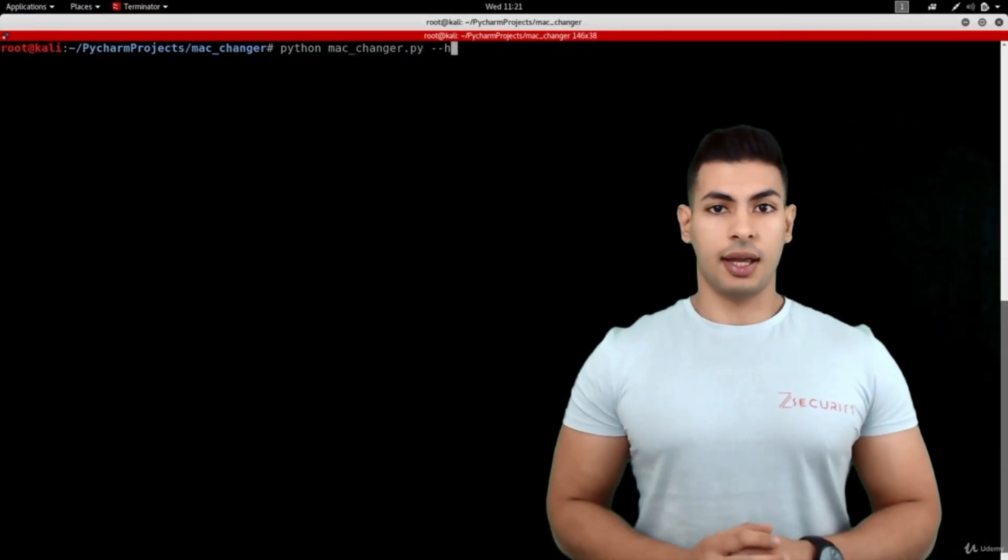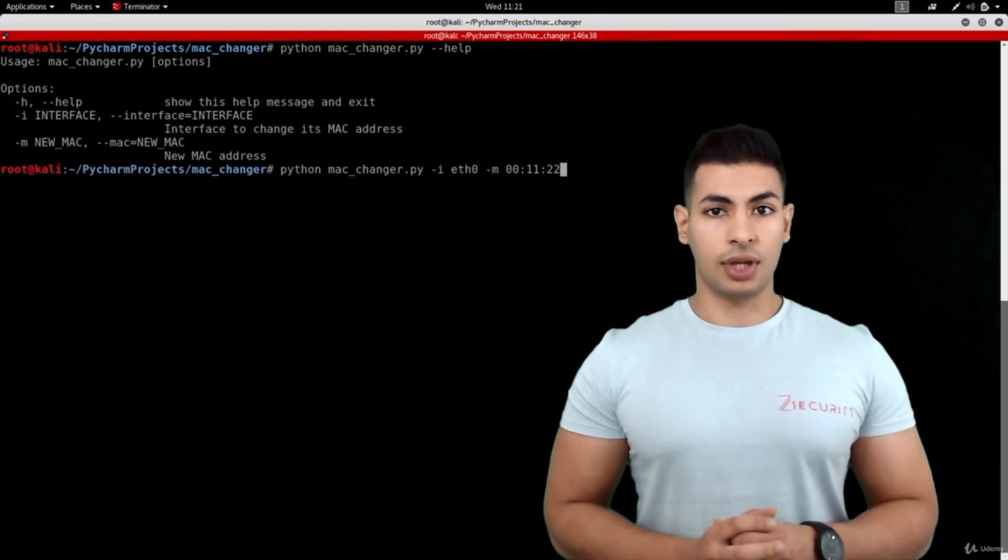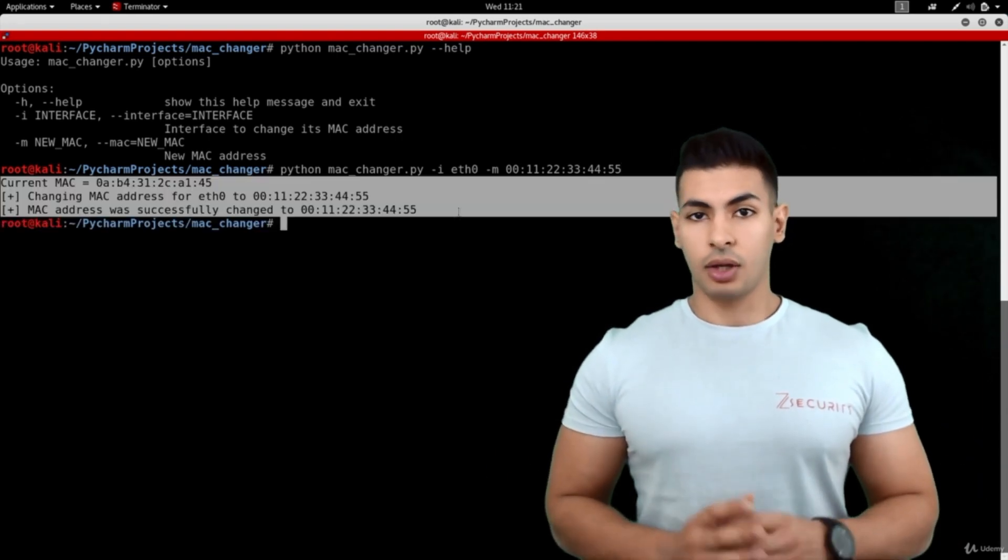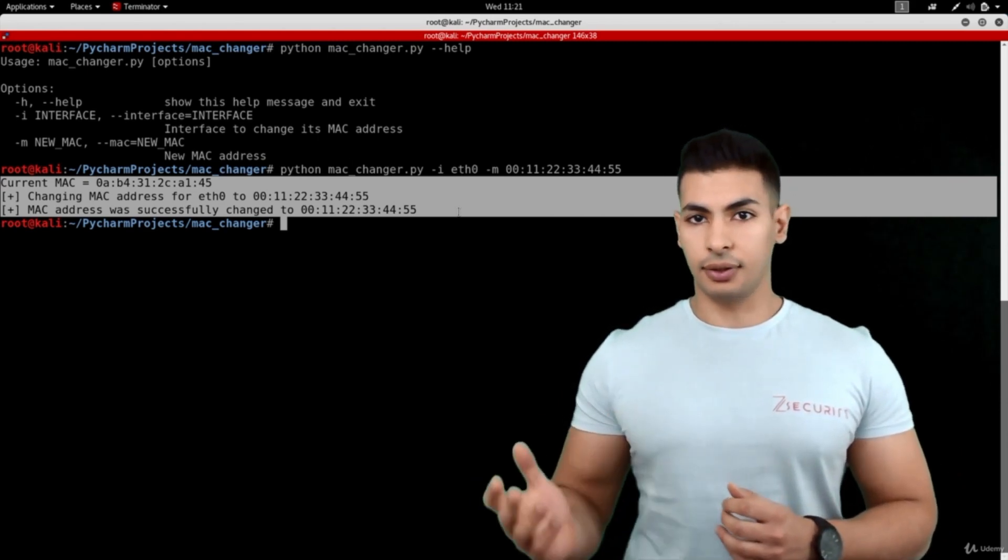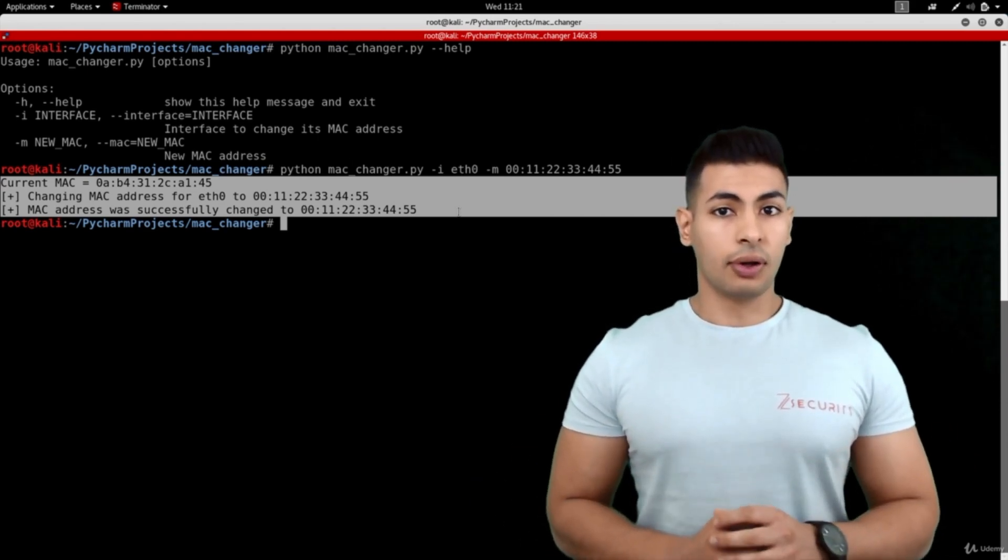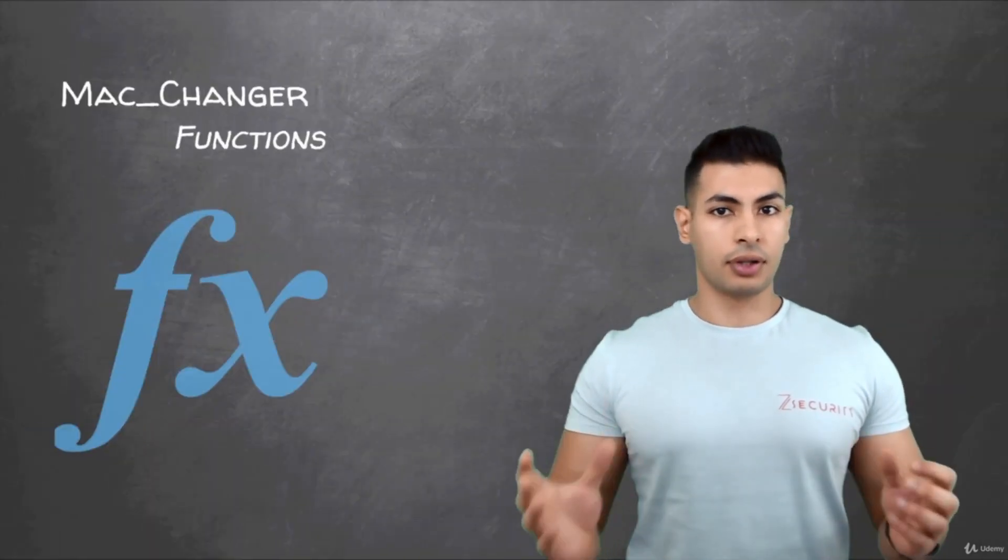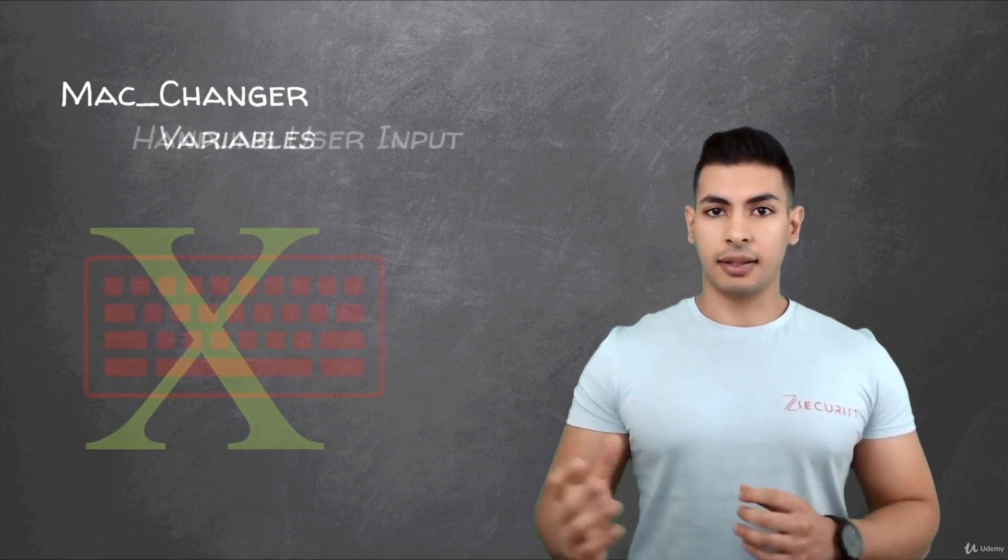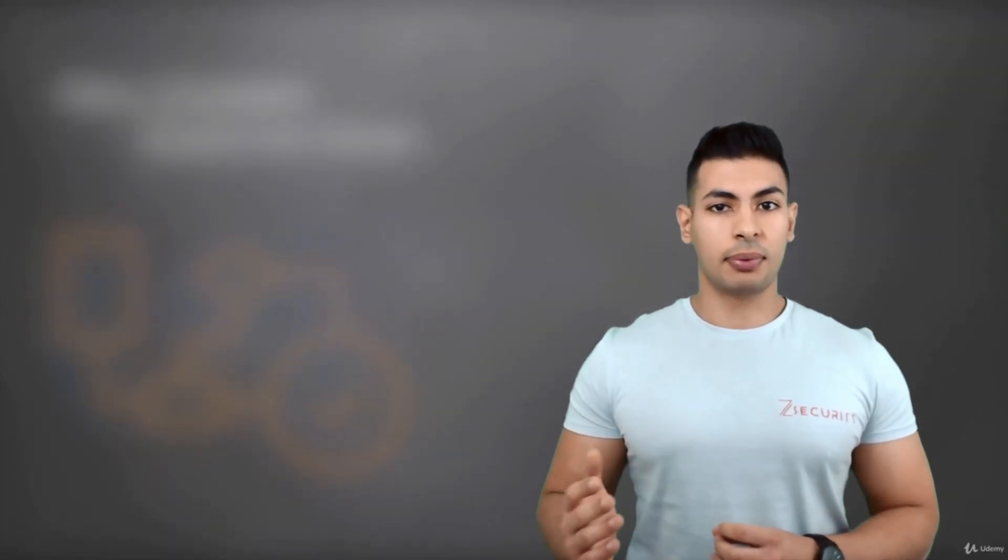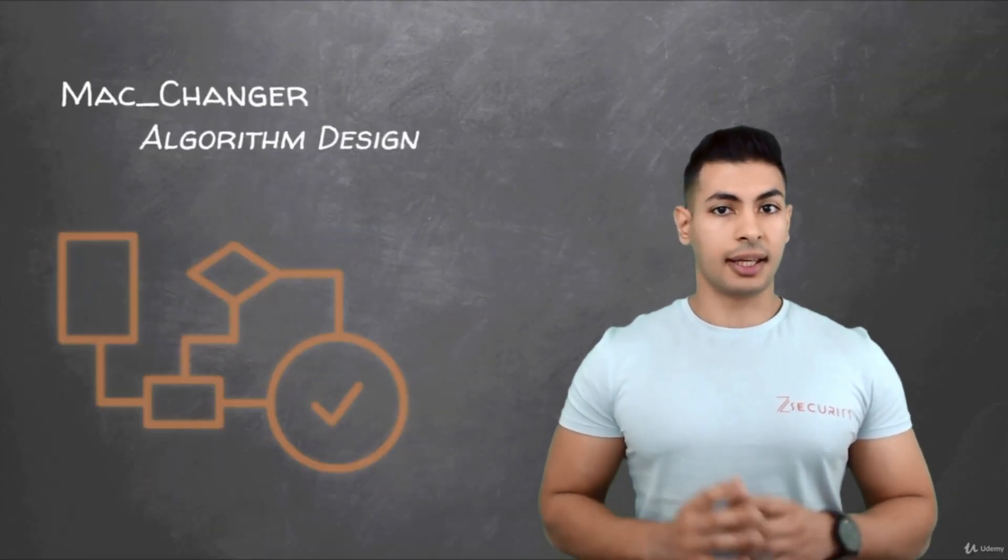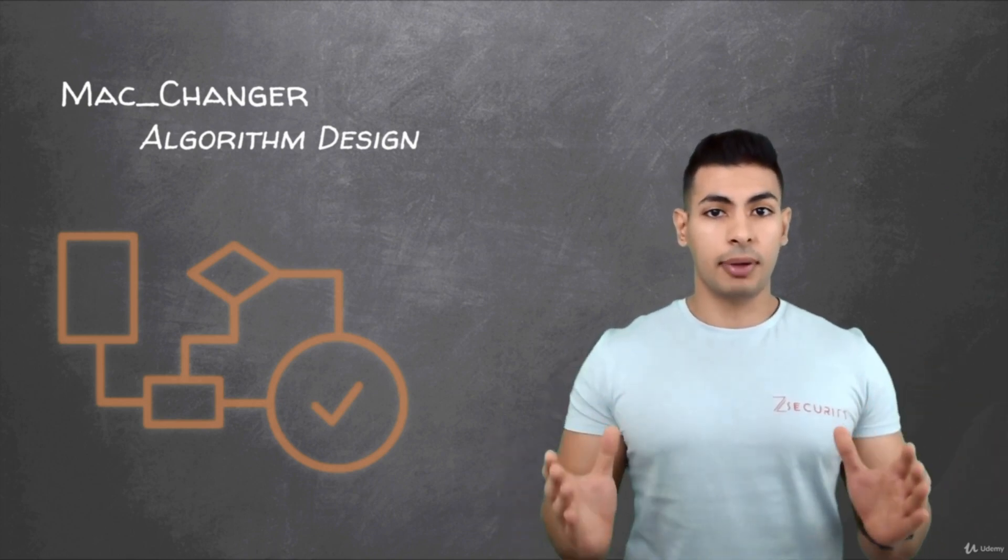The first program we'll write is a MAC Changer. This is a very simple program that can be used to change the MAC address. Don't worry if you don't know what a MAC address is, or why you'd want to change it. We will cover all of that later on. Basically, the whole point of writing this program is to introduce you to Python basics, such as writing functions, variables, handling user input, regex, and so on. In here, you'll learn how to properly model a problem, write an algorithm to solve this problem, and then write Python code to implement this solution.